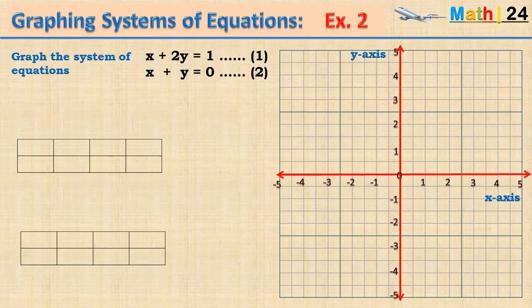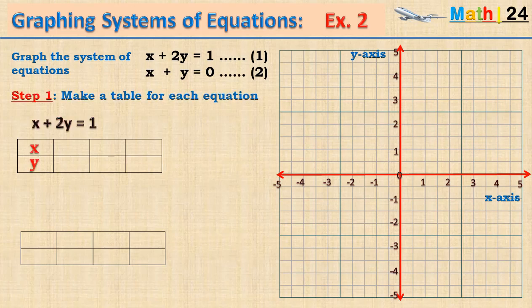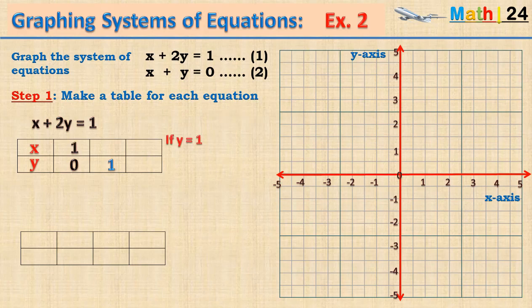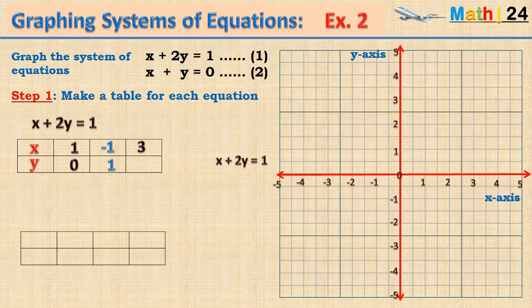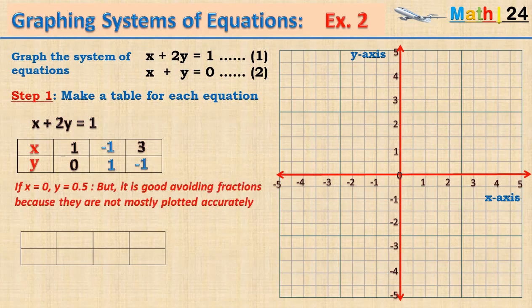Let us take another example. We have the system of equations: x plus two y equals one. Making the table of values — if y equals zero, then x equals one. If y equals one, we have x plus two equals one, therefore x must be minus one. If x equals three, we have three plus two y equals one, therefore y must be minus one. Note that the point where x equals zero gives y equals 0.5, which is good to avoid since fractions cannot be accurately plotted on the plane.